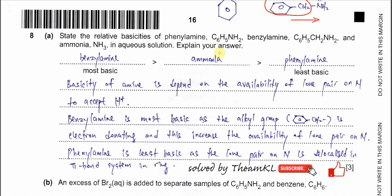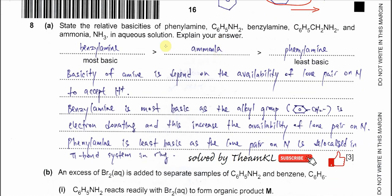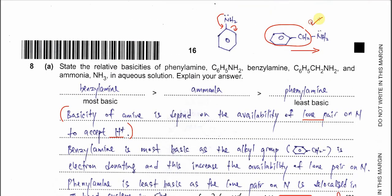The key point to explain is basicity. The basicity of an amine depends on the availability of the lone pair on nitrogen to accept a hydrogen ion. If the lone pair on nitrogen is more available, then it is more basic. That is why benzylamine is the most basic amine among these three.